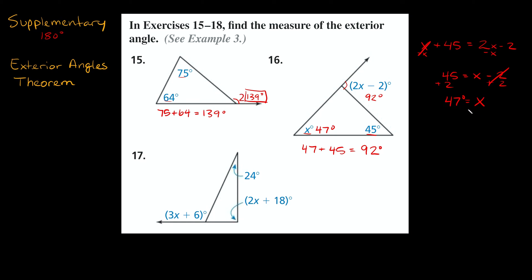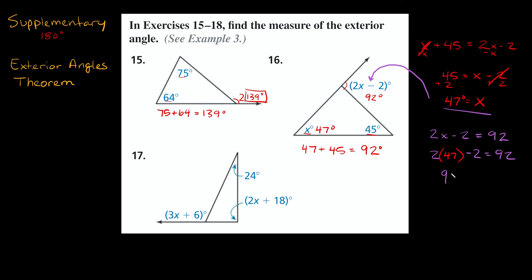Let's verify by plugging x equals 47 into the exterior angle expression: 2x minus 2 should equal 92. So 2 times 47 minus 2 equals 94 minus 2 equals 92. We get 92 equals 92, so our answer checks out.